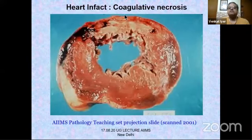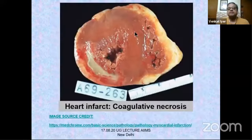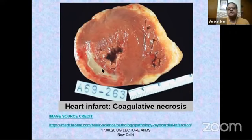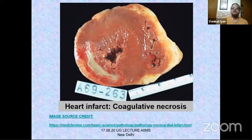A heart infarct shows coagulative necrosis — yellowish color macroscopically, compared to normal pink. On histology, heart muscle is hypereosinophilic with nuclei gone; at the interface, inflammatory cell infiltration is seen. This is coagulative necrosis because the structure is still maintained. Over time, the area will become more liquefied. Liquefaction ultimately clears the area; inflammatory cells come in, and healing occurs by fibrosis — covered in subsequent chapters.